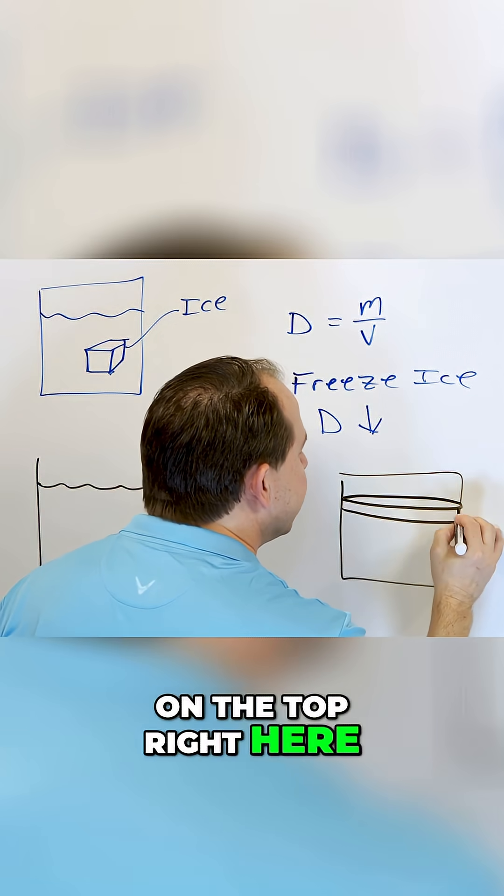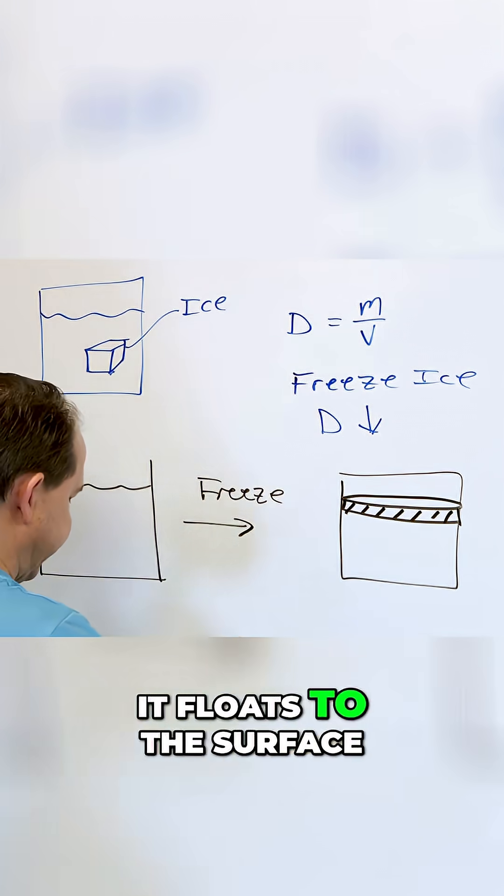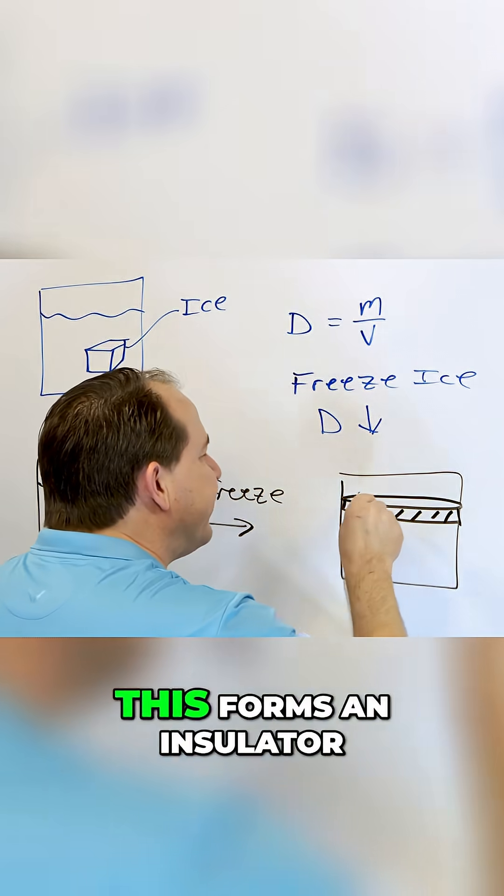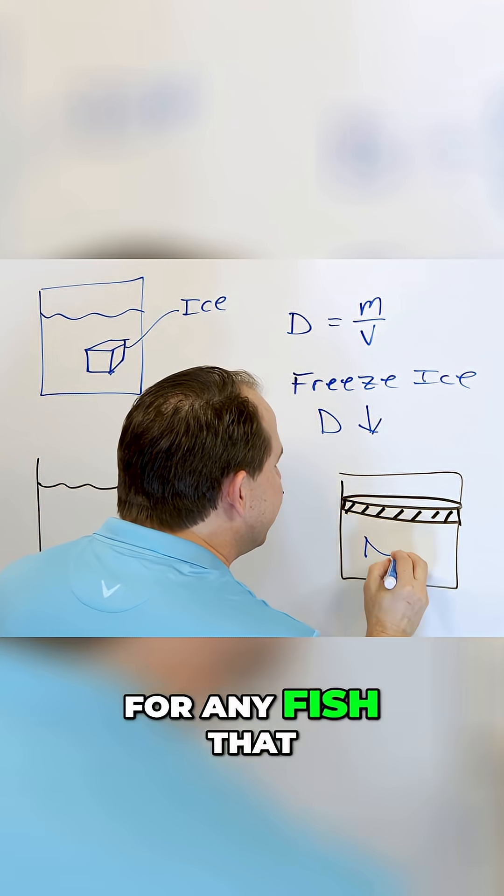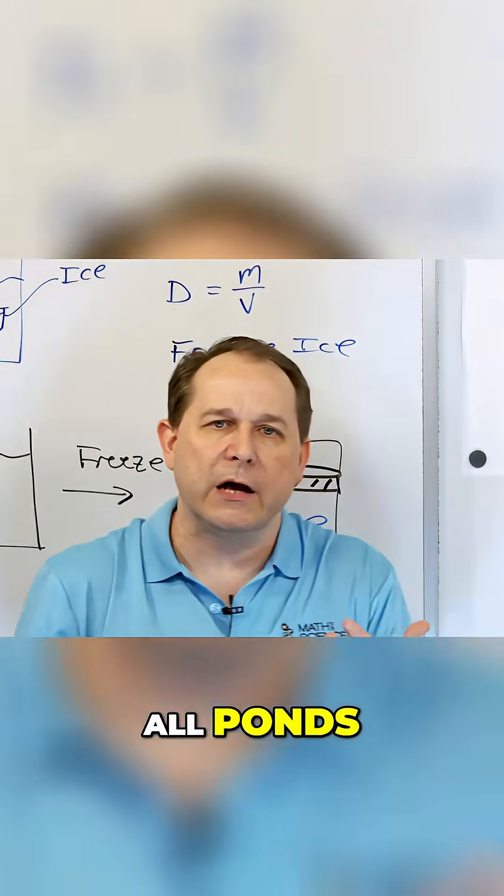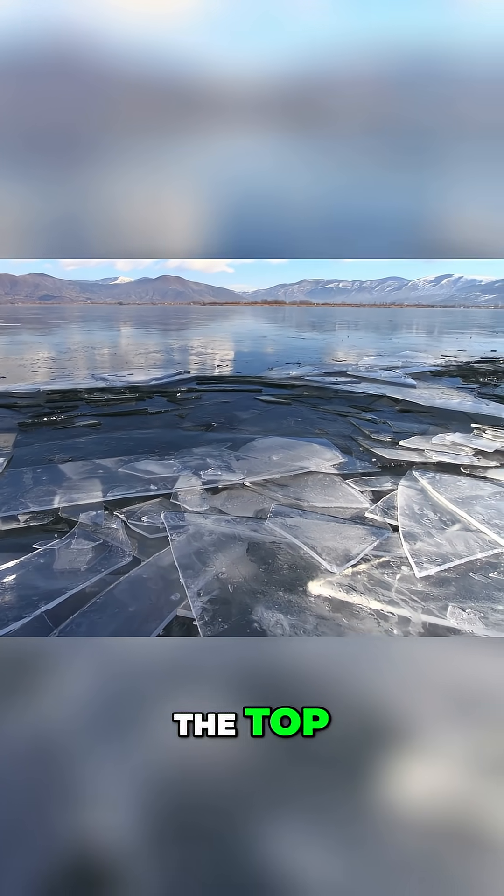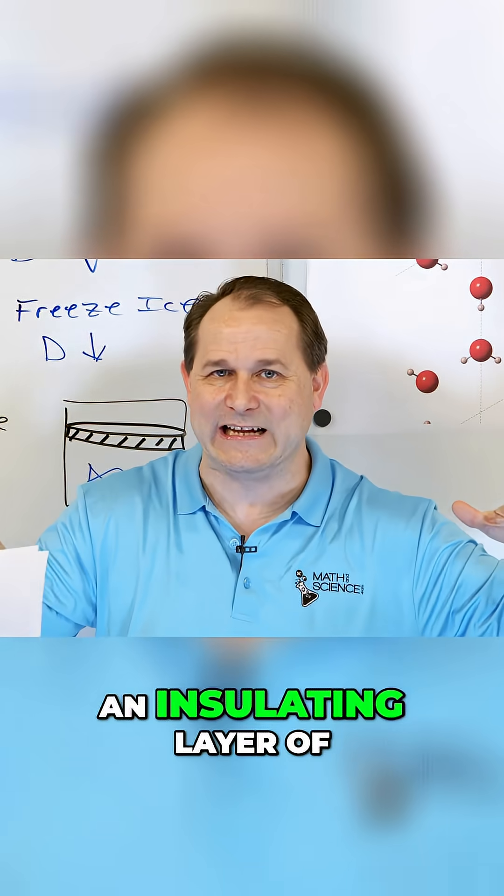Right here, this is a thin layer of water ice. Anytime it freezes, it floats to the surface, and that means that this forms an insulator for any fish that are swimming in the bottom or whatever. All ponds, lakes, rivers, streams—they all freeze from the top, and that top forms an insulating layer of ice.